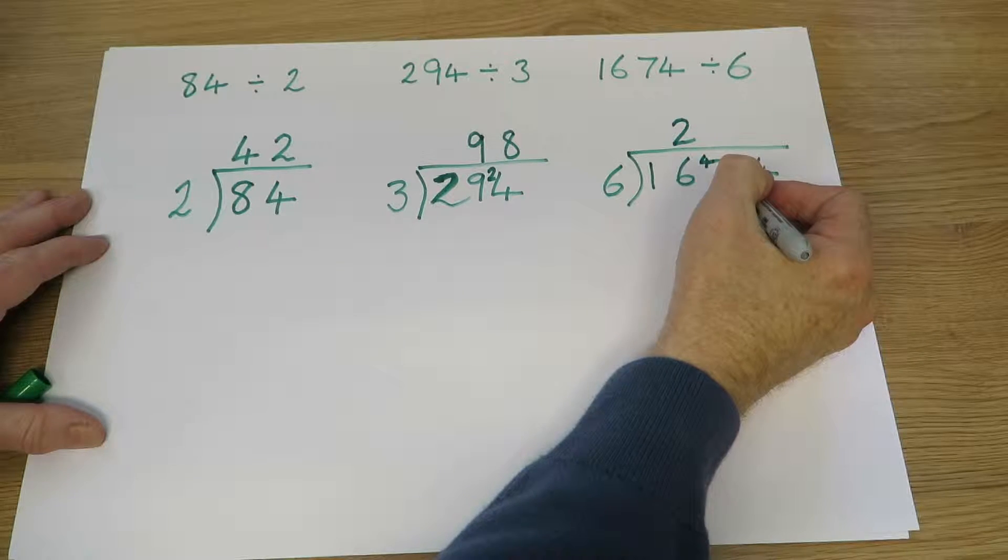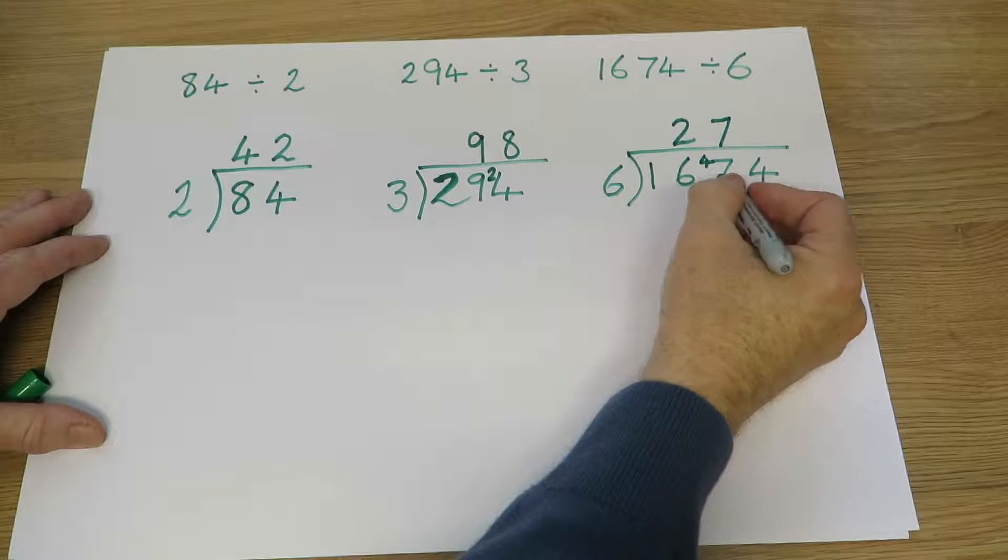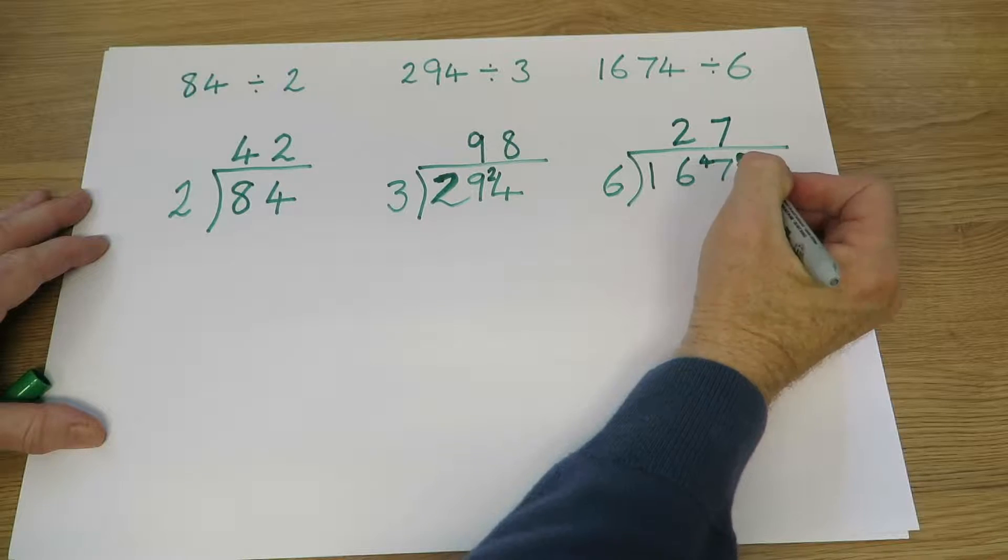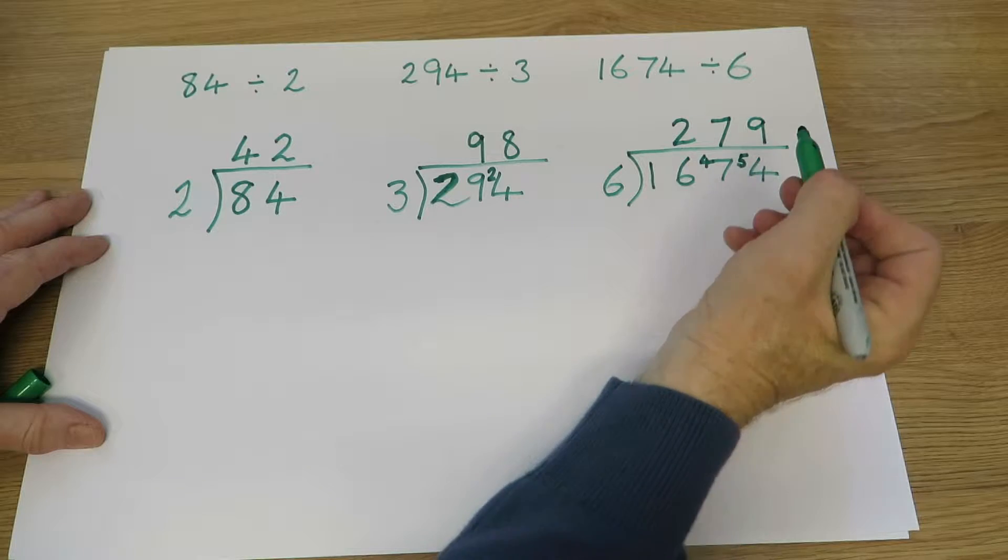How many sixes in 47? There are 7 sixes, because 7 sixes are 42. There'll be 5 left over. How many sixes in 54? 9. So the answer is 279.